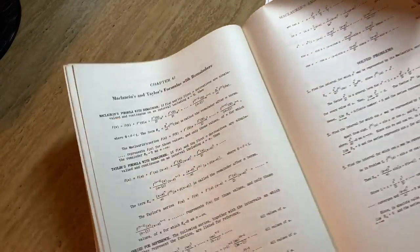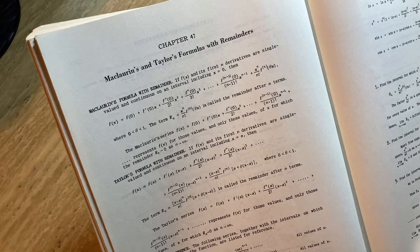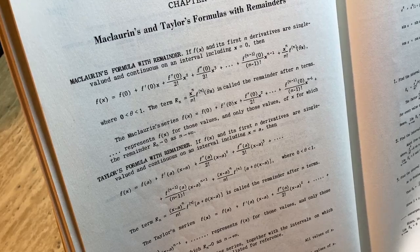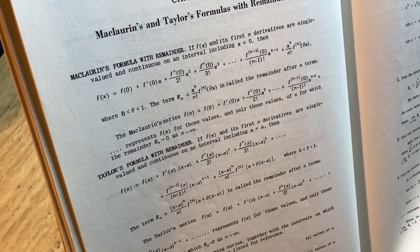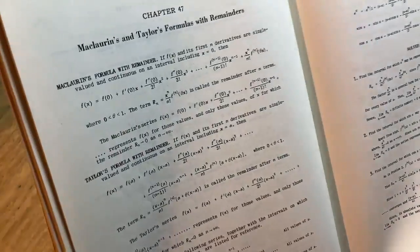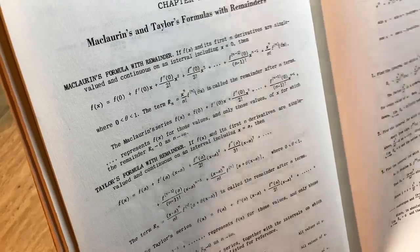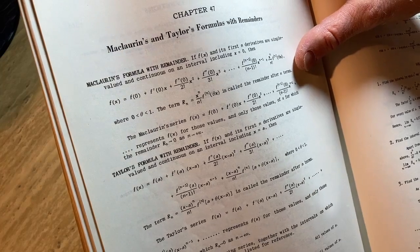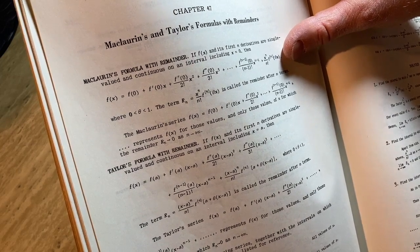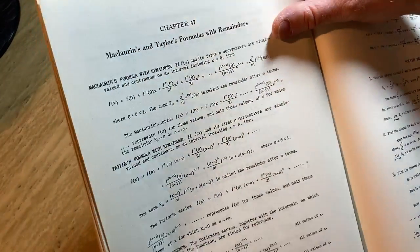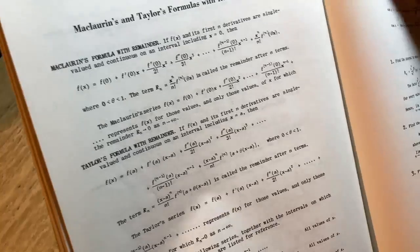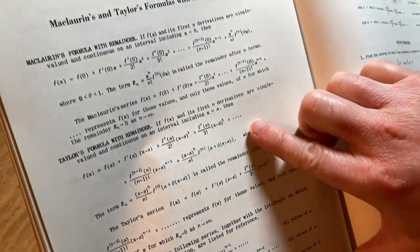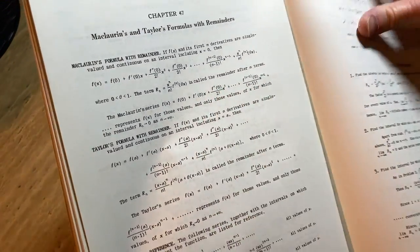Oh, Maclaurin and Taylor's formula with remainders. How exciting. Yeah. If f of x and its first n derivatives are single-valued and continuous on an interval, including x equals 0, then you have f of x. It's equal to that. Cool. And then it talks about the Maclaurin series being the infinite series. Typically called the Maclaurin polynomial. When it's finite, you call it a Maclaurin polynomial. And when it's infinite, you call it a Maclaurin series. And then Maclaurin basically is Taylor. It's basically a Taylor series centered at 0. So here's the Taylor formula with remainder. And then here's the Taylor series down here. And you see if a is 0. So if a is 0 in this formula, you're going to get the one up here.